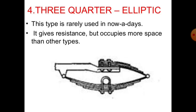The fourth type is the three-quarter elliptical spring. This type is also rarely used nowadays. It gives resistance but occupies more space than other types. In this type, as seen in the diagram, more space is required, which is why it is not mostly used in vehicles.